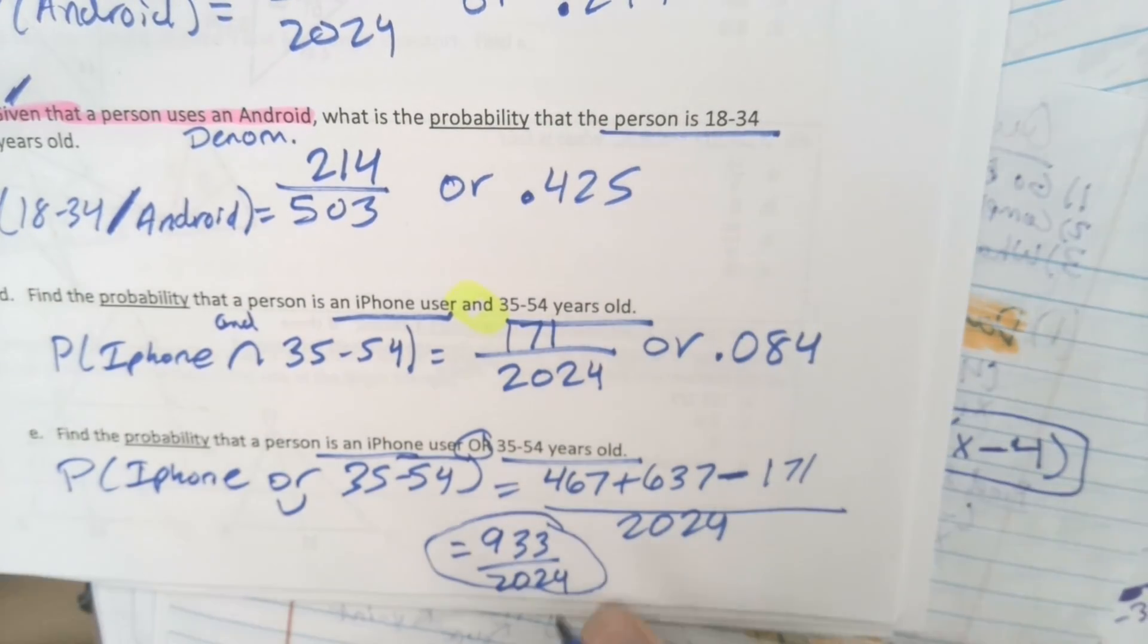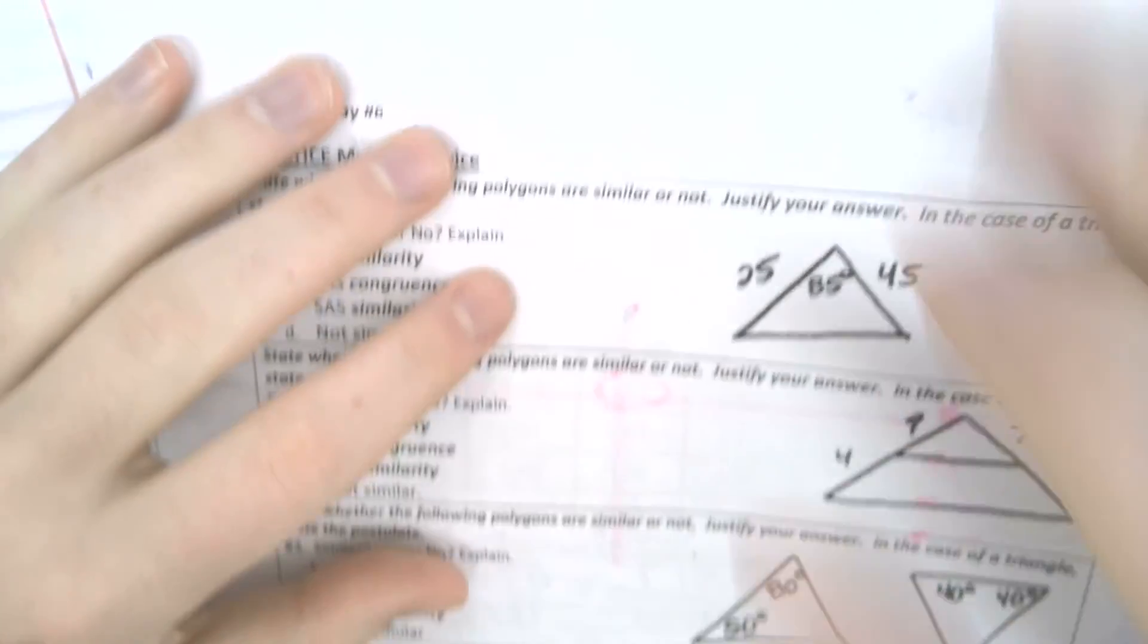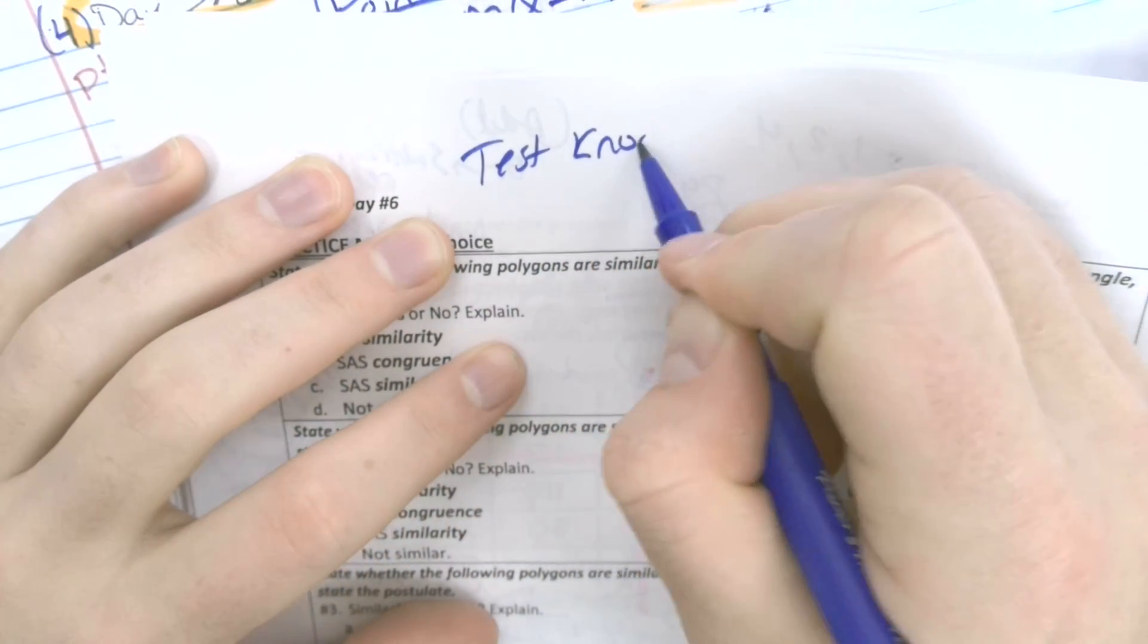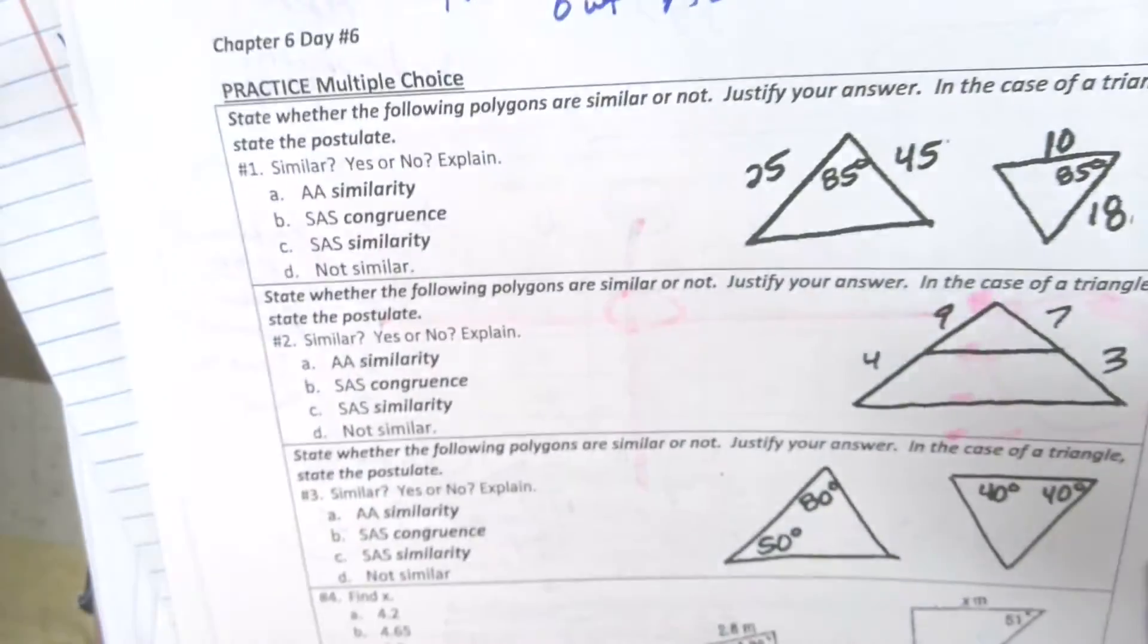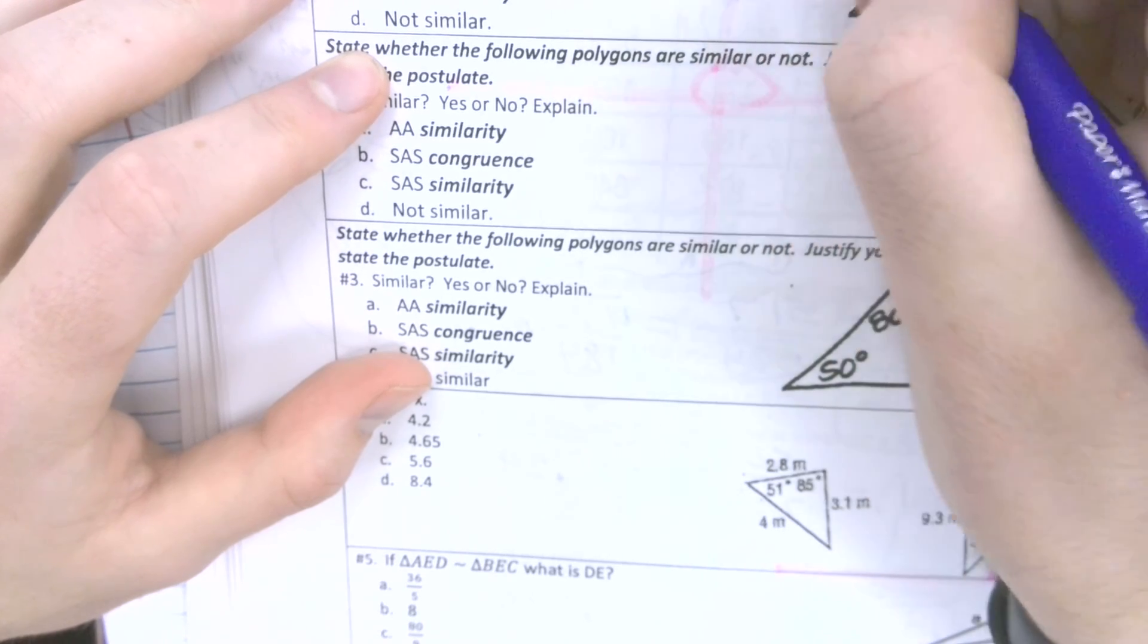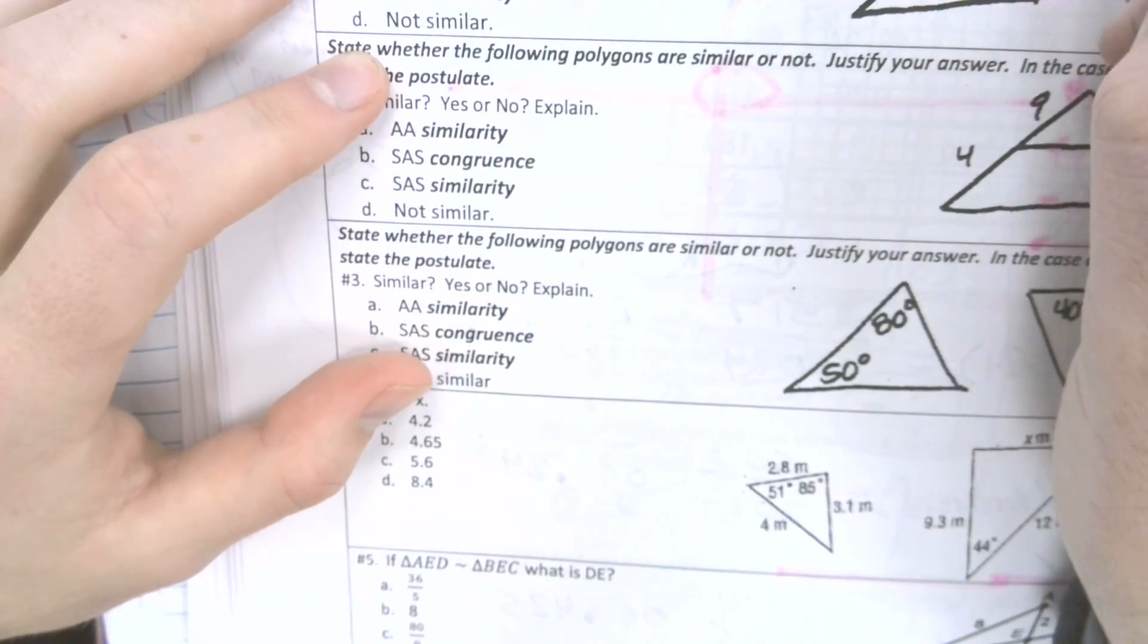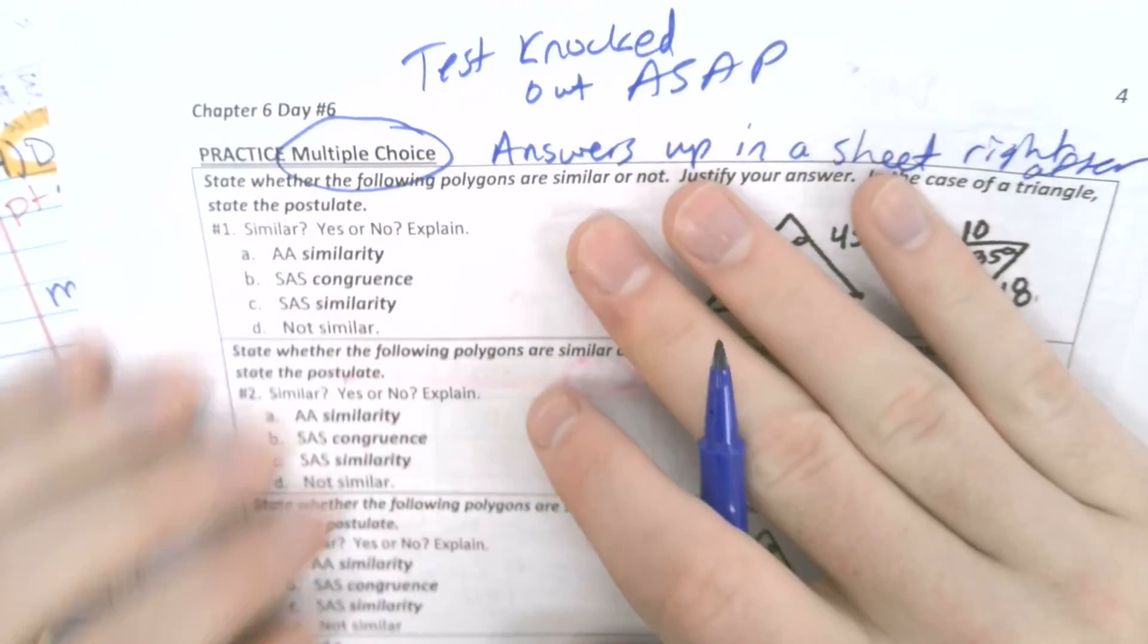All right. Great job, guys. We got our test tomorrow and over the next couple of days. So try and get that knocked out as soon as you can. Get tests knocked out ASAP. And if you want to, here's some great, here's just six questions. Great multiple choice. I will put the answers up in a sheet later. Right after this, actually. So you can look for this. It'll be attached. The answers to these six will be attached. Thank you, guys. Have a good rest of your Monday and go jumpers.